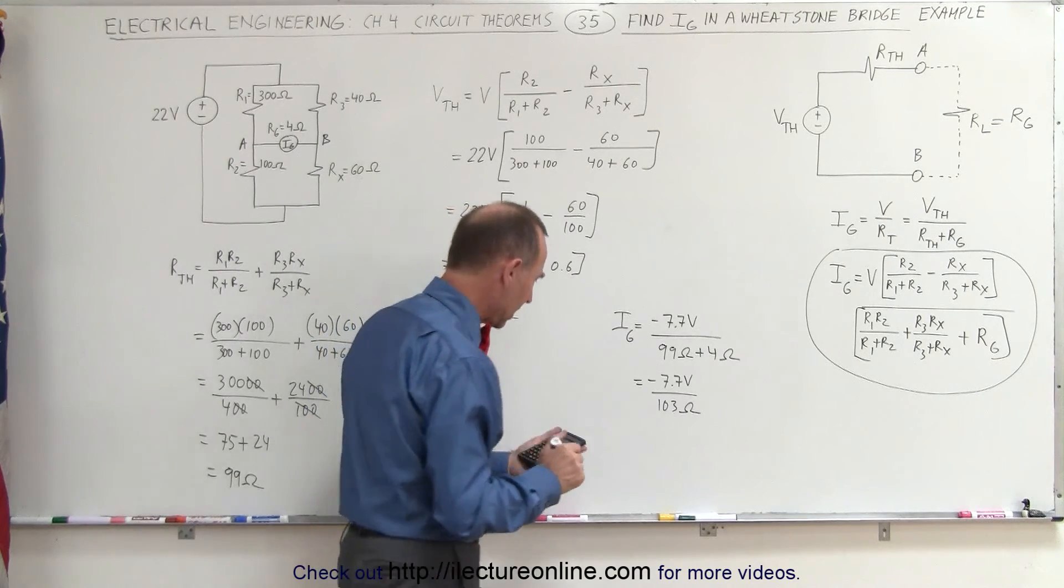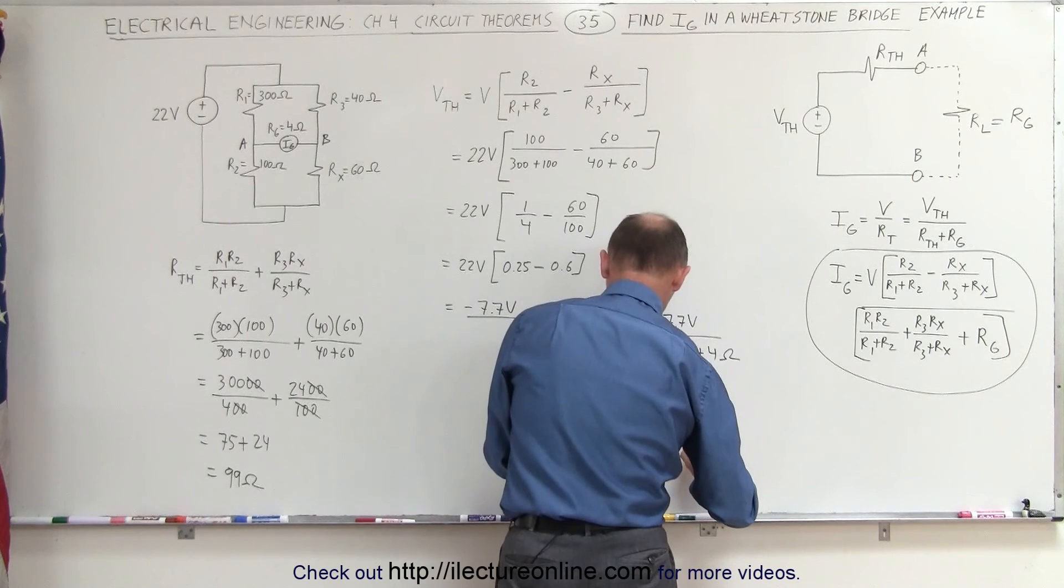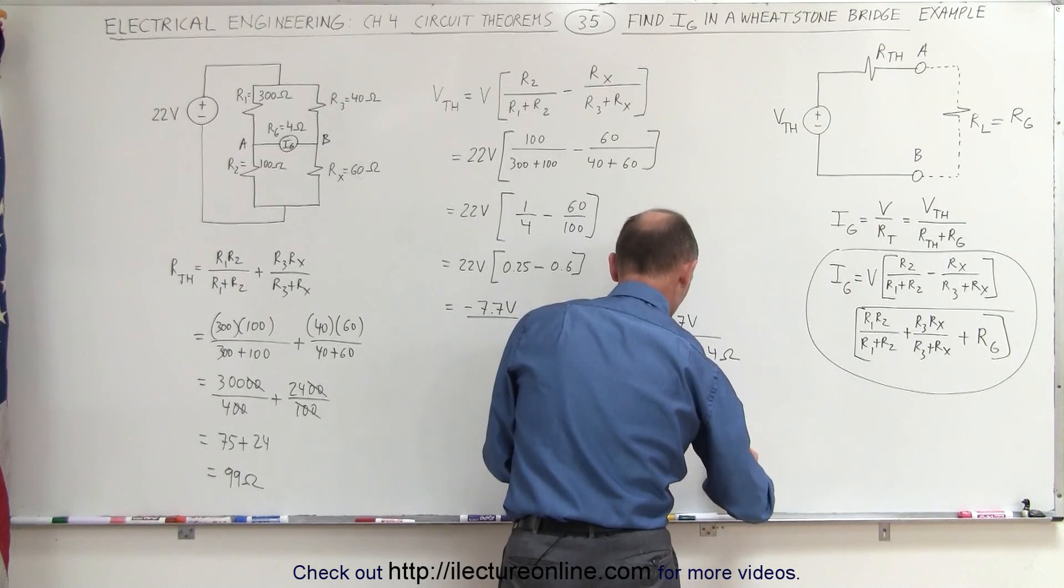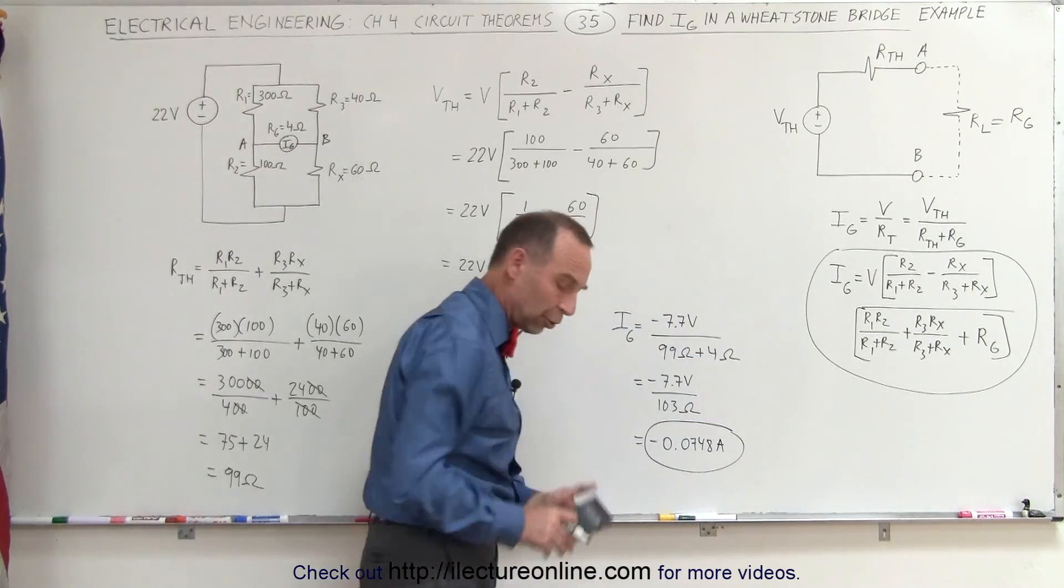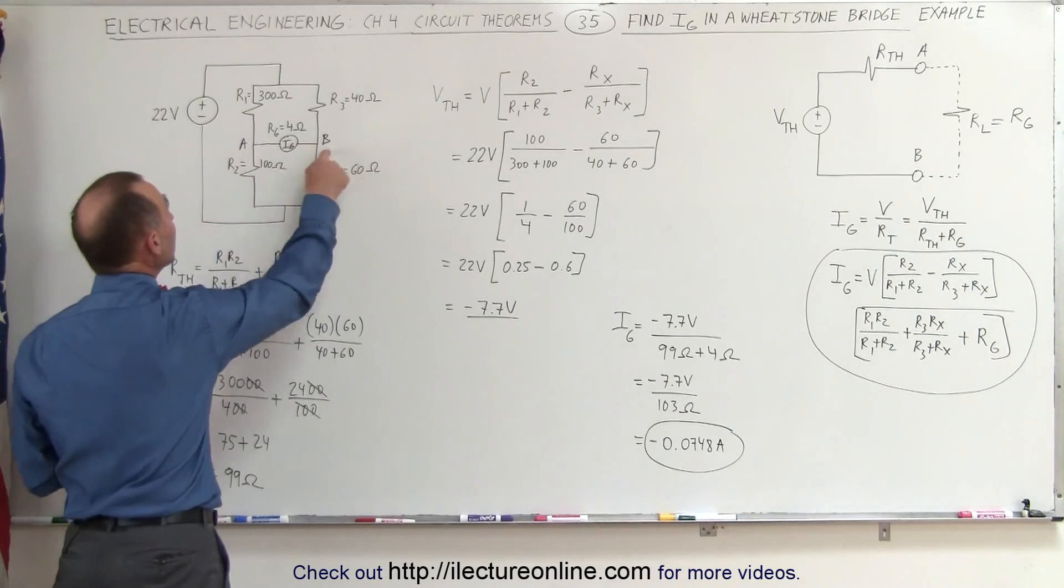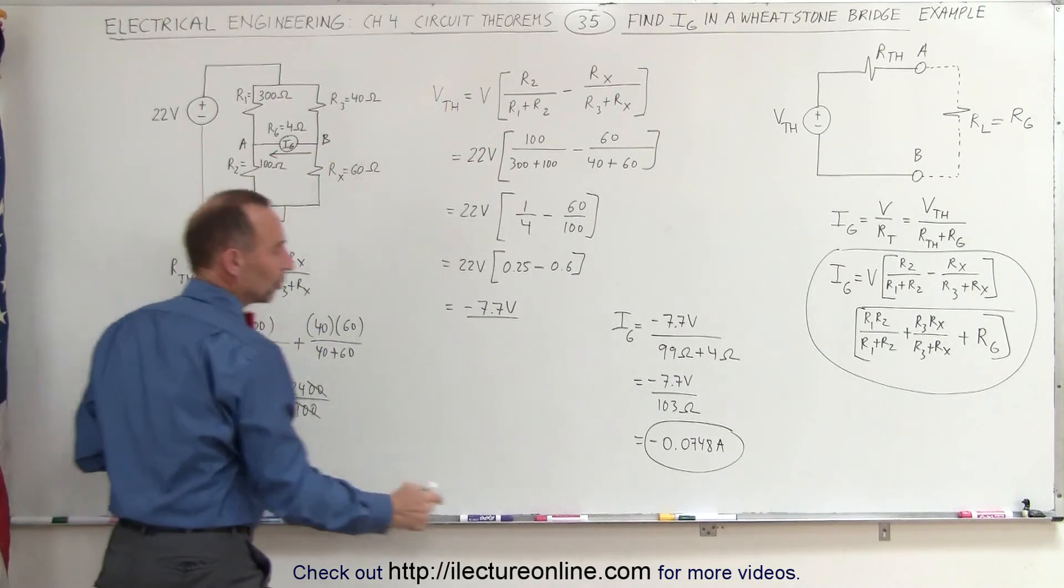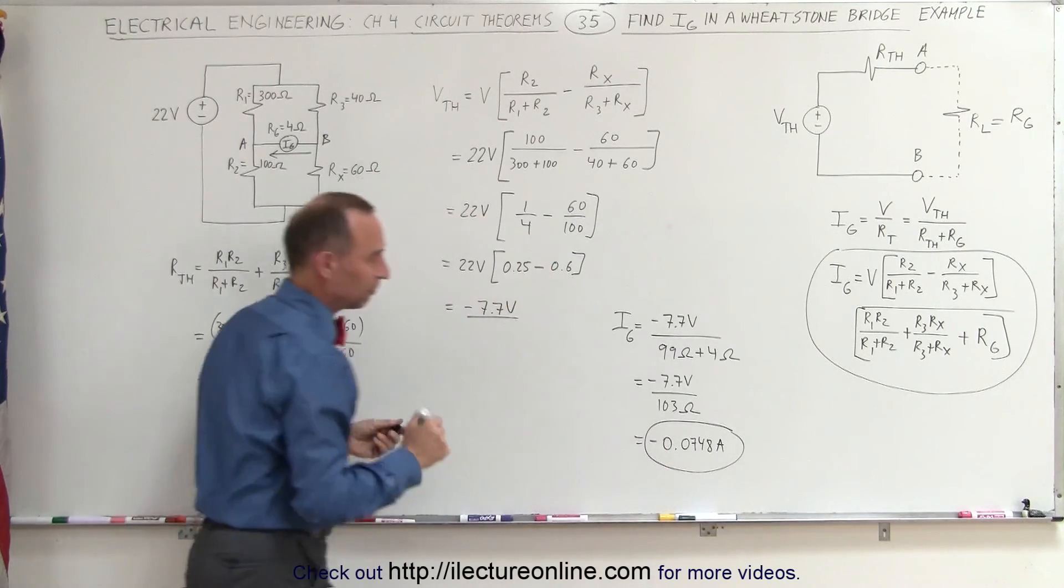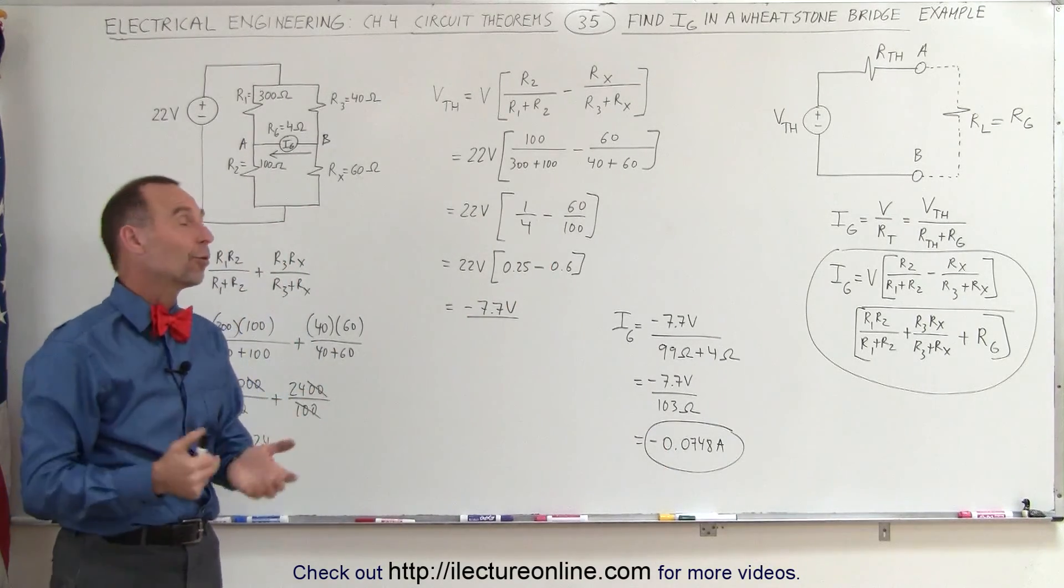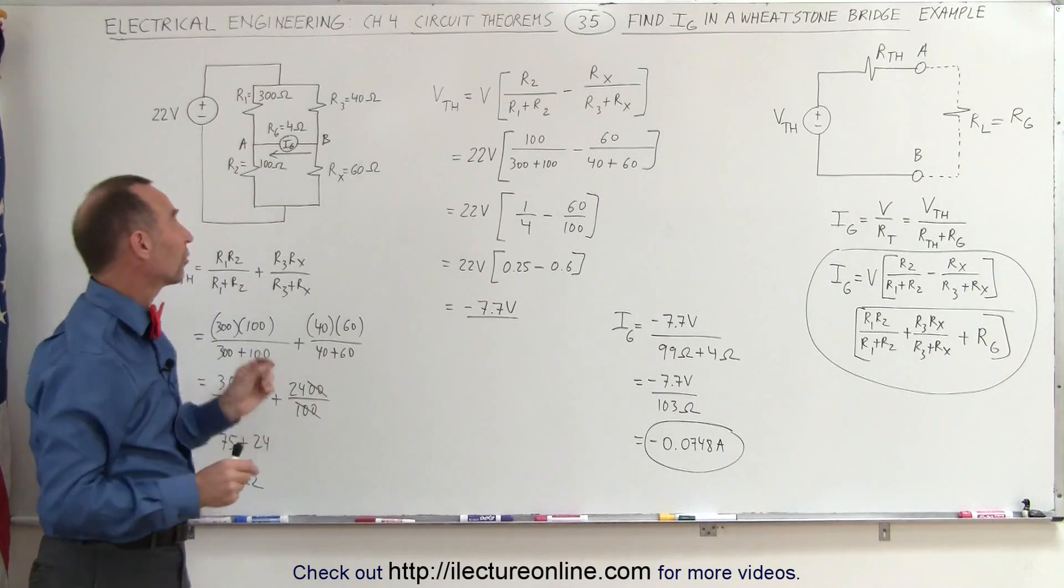and we get a minus 0.0748 amps. And that would be the current going to the galvanometer, but instead going from A to B, we can see that the current flow actually is from B to A. The magnitude of the current is 0.0748 amps. And that's how we do an example of a Wheatstone bridge, and how to calculate the current from the two points across the galvanometer. And that's how it's done.